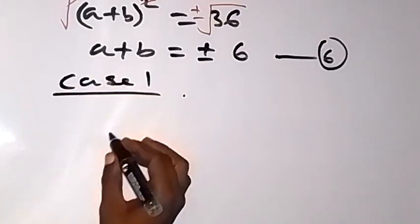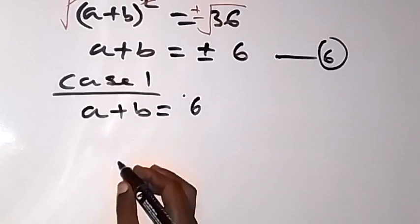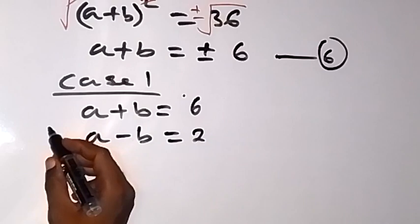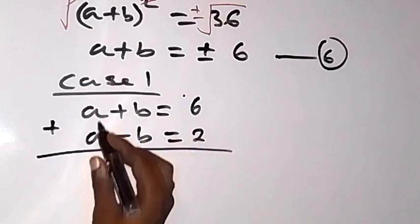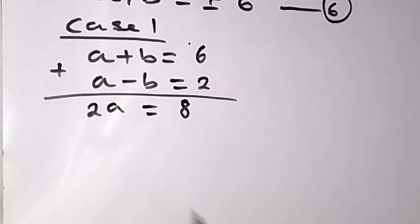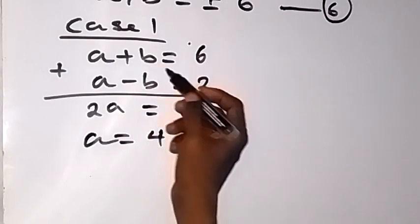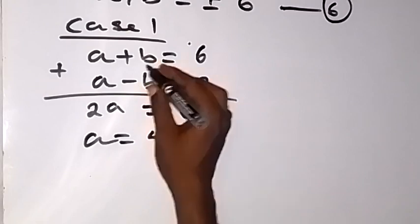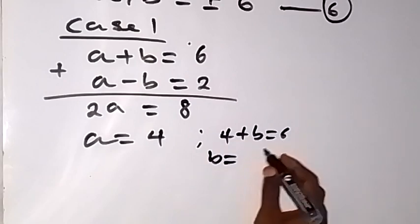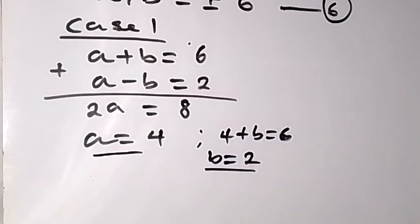For case 1, let's say when we have a plus b equals to 6. Let's bring our equation 1 together with this so that we can solve it. We have a minus b from equation 1 equal to 2. By the time we add these two equations to eliminate b, a plus a will be 2a, and 6 plus 2 is 8. Dividing both sides by 2, a equals 4. Substituting a equals 4 into the first equation: 4 plus b equals 6, so b equals 6 minus 4, which is 2. So a equals 4 and b equals 2.